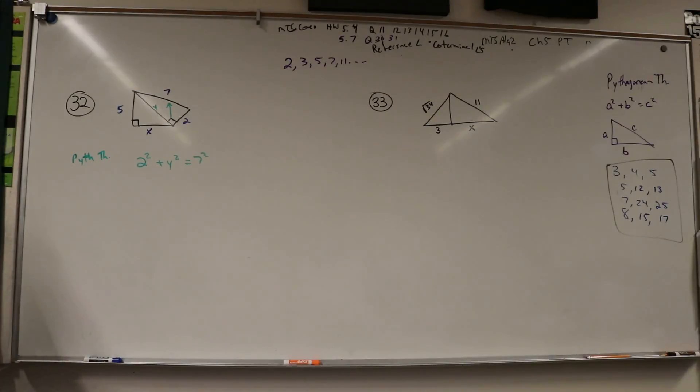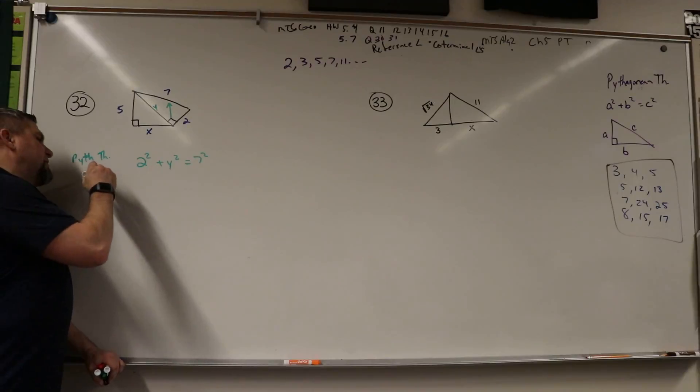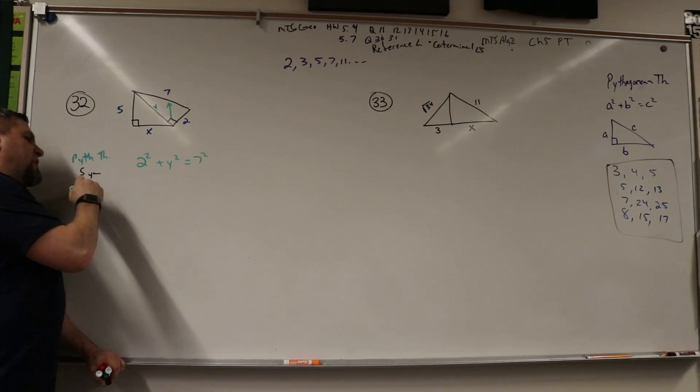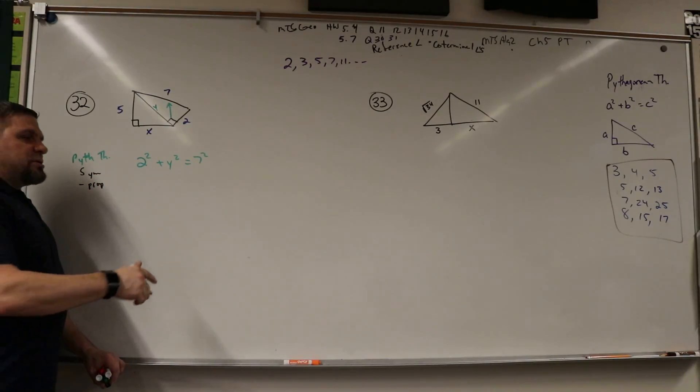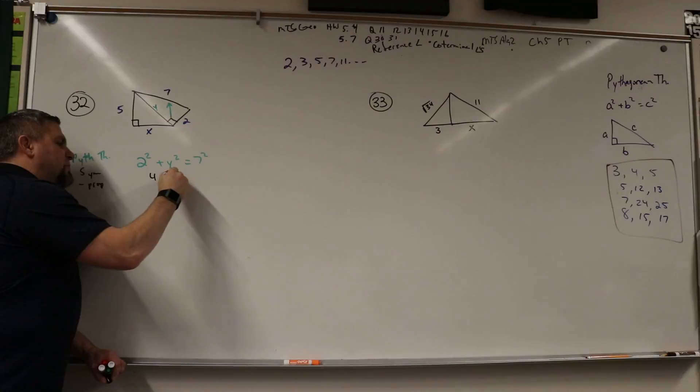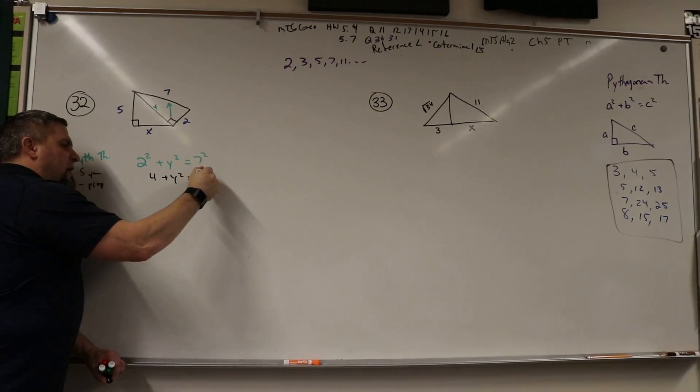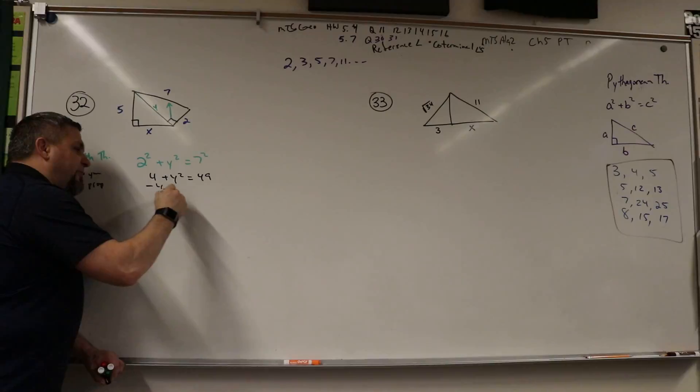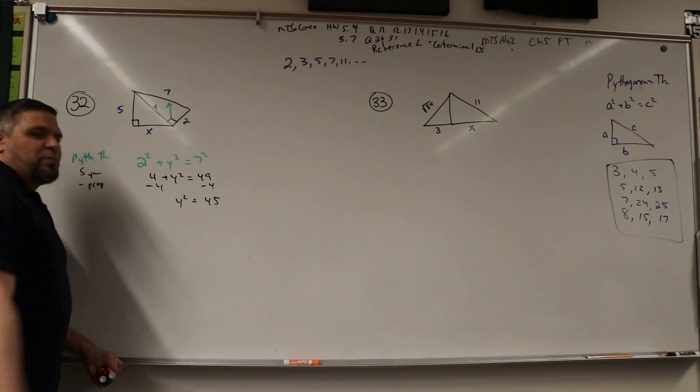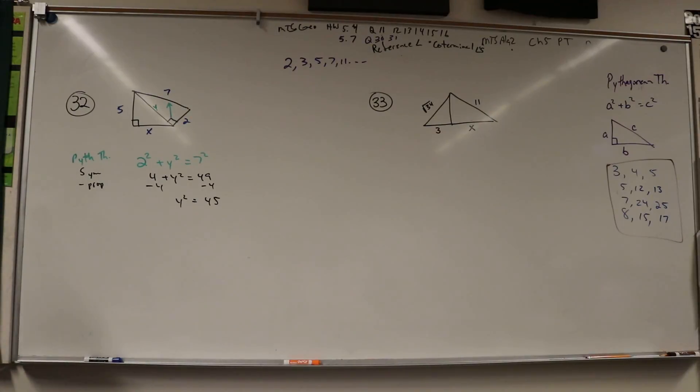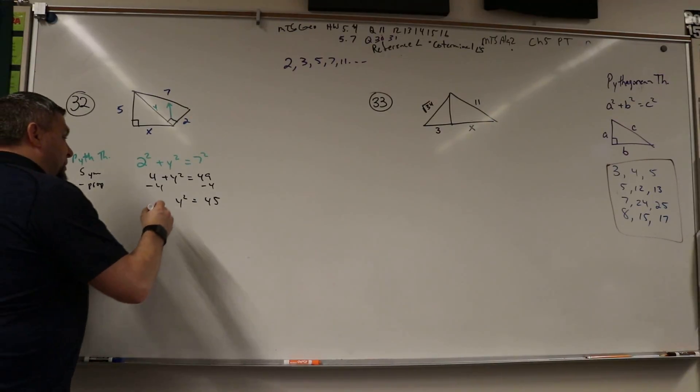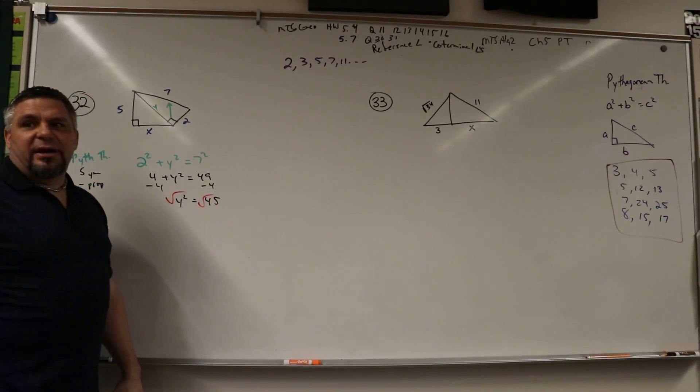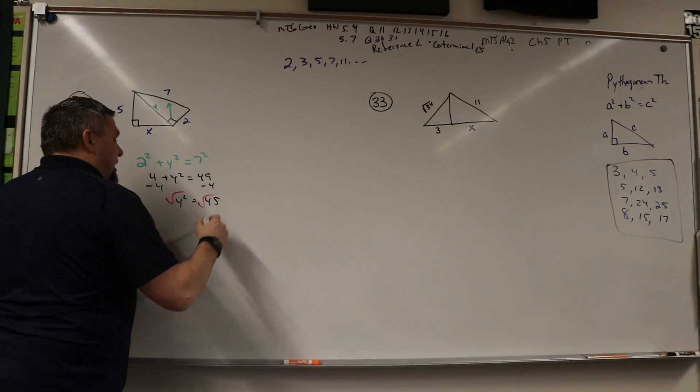What do I do from there? Well, just a lot of simplification, right? Subtraction property of equality, stuff like that. So I'm going to say this is 4 + y² = 49, and I'm going to subtract 4 to get y² = 45. Well, what is 45? We're going to square root it.